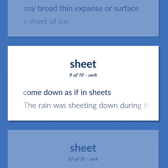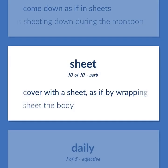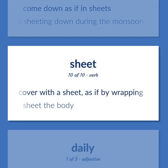Sheet (verb): Come down as if in sheets. Example: The rain was sheeting down during the monsoon. Also: cover with a sheet, as if by wrapping. Example: Sheet the body.